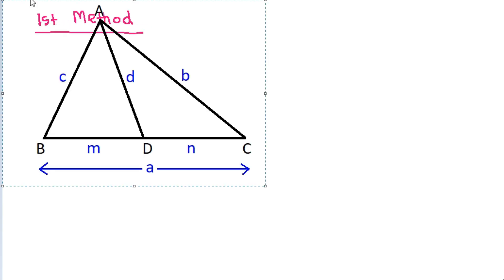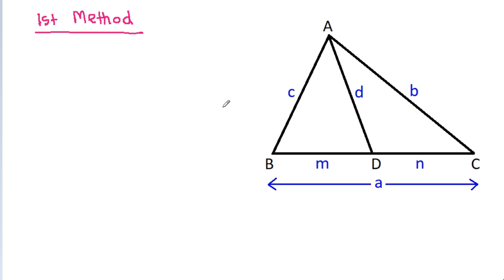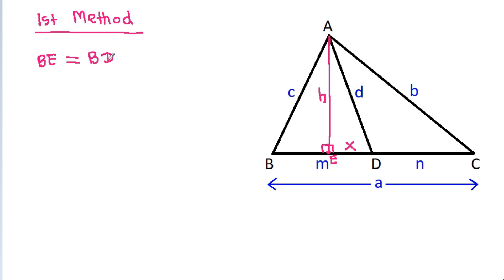First method: if we draw a perpendicular from A on BC, suppose this foot of perpendicular is E, and suppose AE is h and ED is x. Then BE will be equal to BD minus ED, that will be equal to m minus x.